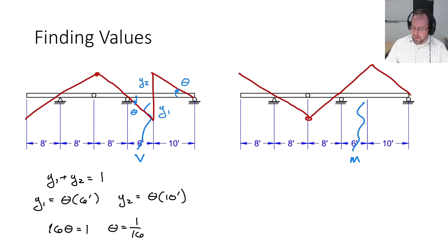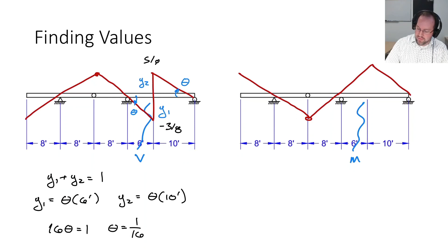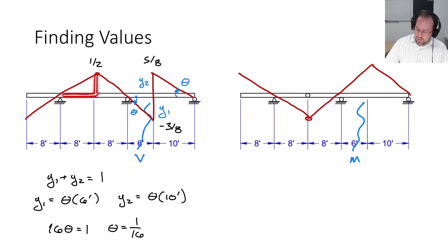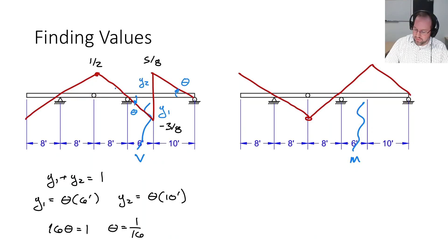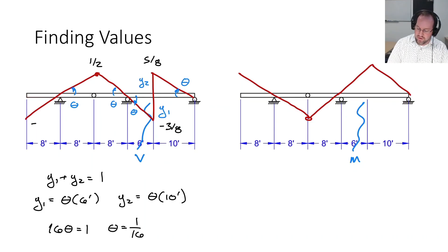Now that I know theta, I can find the values: y1 is (1/16) × 6 = −3/8, therefore y2 is 5/8. The slope continuing to the right is the same theta, giving a value of positive one-half at that location. Using similar triangles, the slope theta also applies going back the other direction, so (1/16) × 8 gives a value of negative one-half.